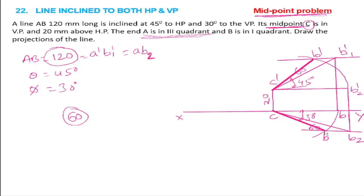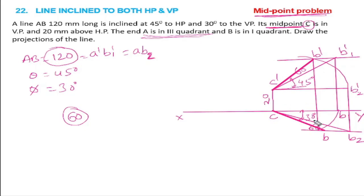C dash B dash is the front view only for 60mm length, and C-B is the top view only for 60mm length. We can verify by drawing a vertical line between B dash and B — it should be approximately straight, confirming correctness.